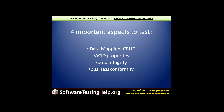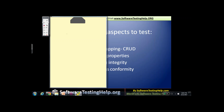The first is data mapping. Let's say I've created an account — whether I'm creating, editing, deleting, or viewing account details from the front end, at the back end it should invoke one of the CRUD operations: Create, Update, Delete, and Retrieve. Data mapping is performing a particular operation on the front end and checking if the respective CRUD operation has been invoked on the back end and if the results have been consistent. That's one of the very basic tests we perform.